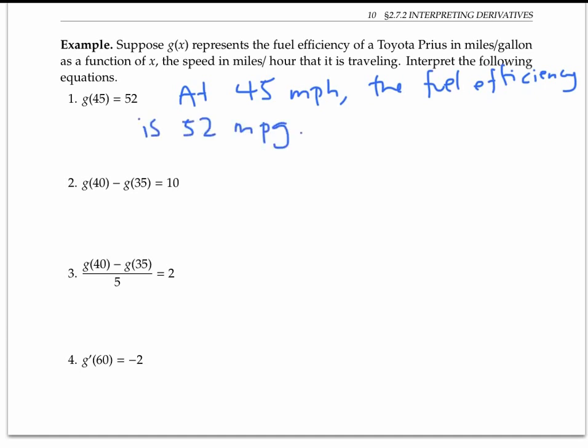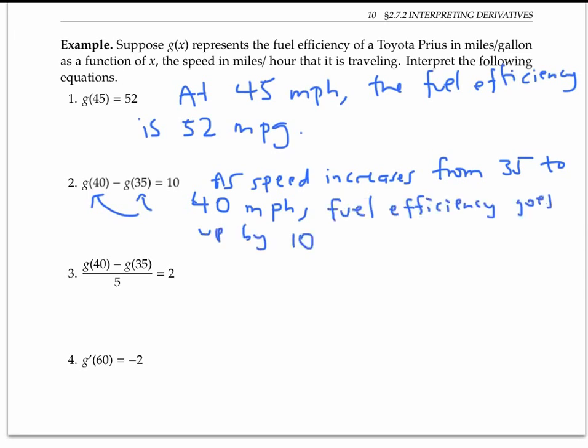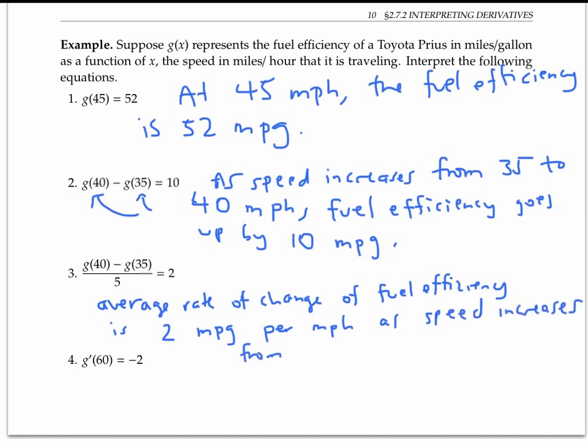The second statement is saying that as speed increases from 35 to 40 miles per hour, fuel efficiency goes up by 10, that's 10 miles per gallon. The third statement says that the average rate of change of fuel efficiency is two miles per gallon per mile per hour as speed increases from 35 to 40 miles per hour. So going up from 35 to 40 gives you better fuel efficiency here.